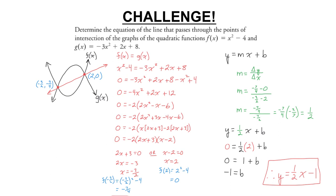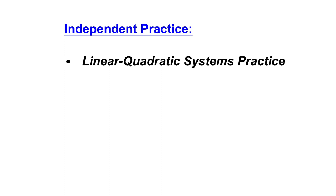That was quite challenging, but all the math is familiar. Combine equations to find points of intersection, then recall from grade 9 and 10 how to find the equation of a line using slope and y-intercept. To summarize: for a linear quadratic system, combine the equations, simplify, and solve. Substitute x back into an original equation to find y — those are your intersection coordinates. Keep an eye on the discriminant of the combined equation if you need to know how many intersection points there are. If you run into any issues, please reach out for help.